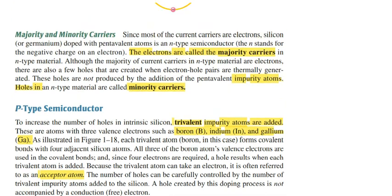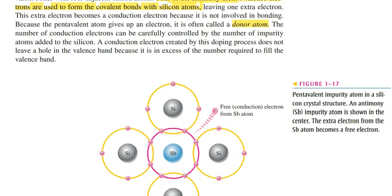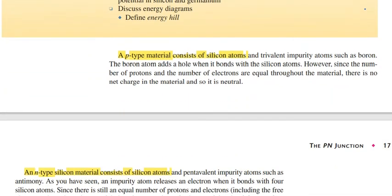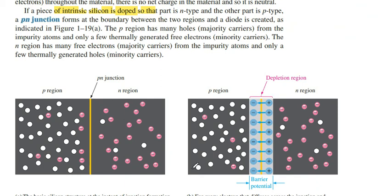The P-type material is called an acceptor atom and the N-type material is called a donor atom because it donates the electron. The next point is the P-N junction. When we take a piece of pure silicon crystal and dope one side to form a P-type region and the other side as N-type, a junction is formed. The P-region has many holes while the N-region has many electrons, and the electrons and holes move toward the junction, recombine, and form a barrier.